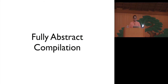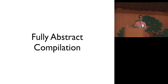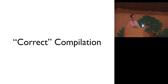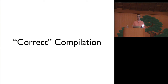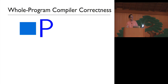I'm going to talk to you about fully abstract compilation — what it is, why you would want it, and how to prove a compiler has this property. Full abstraction is a very strong property for a compiler to satisfy, so let's contrast it to something you're probably more familiar with: correct compilation, the kind of theorem proven about the CompCert compiler. I'll call this property whole program compiler correctness.